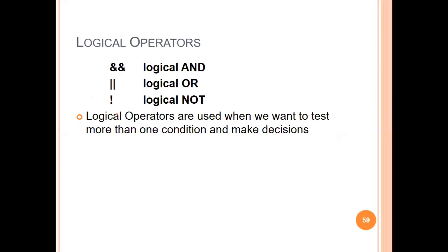Next are logical operators. The logical AND operator uses two ampersand symbols (&&). The logical OR operator uses the pipe character (||). Logical operators are used when you want to test more than one condition and make decisions.